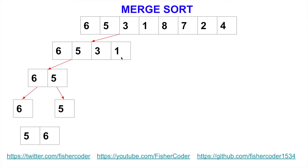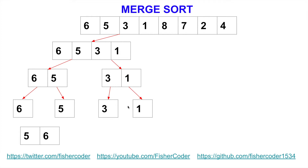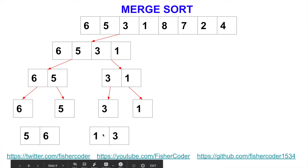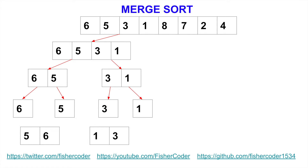3 and 1. So we divide 3 and 1 into two individualized items. What's the correct order of 3 and 1? It should be 1 and 3, right? So now you see we have these two subarrays that are sorted by themselves. But if they are combined, they are not sorted yet. This is where the word merge sort — merge — comes into play.